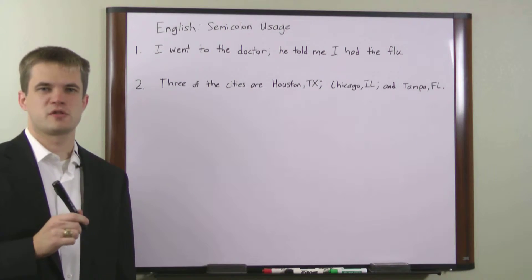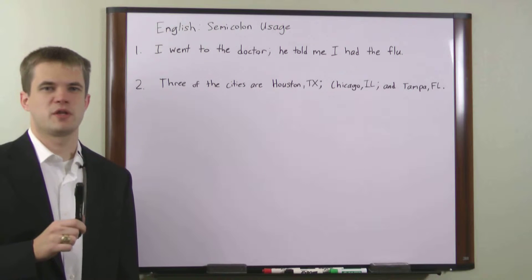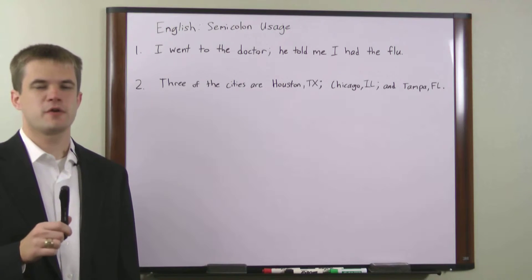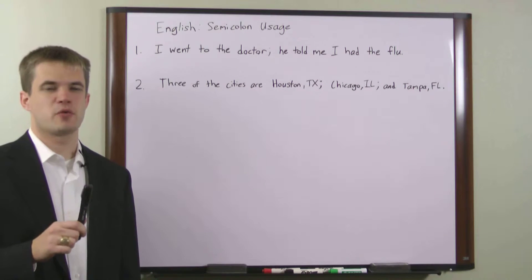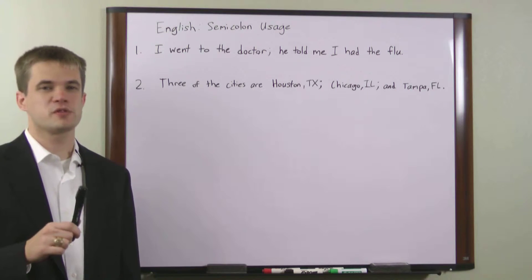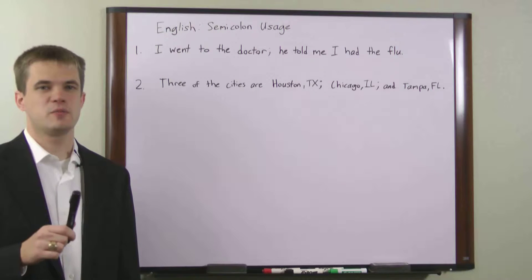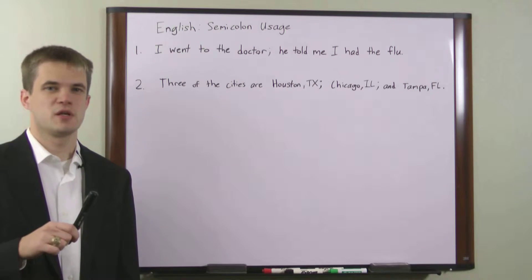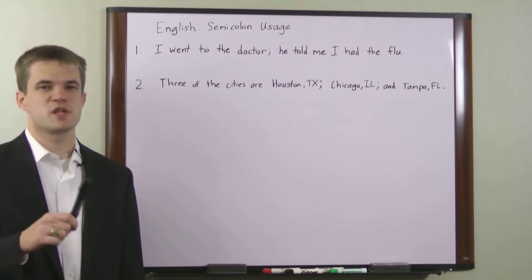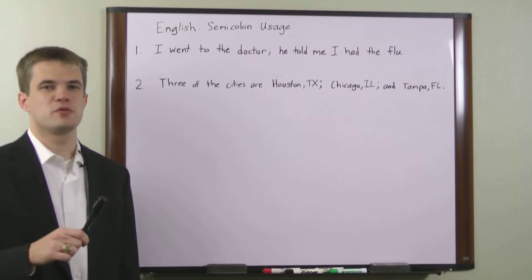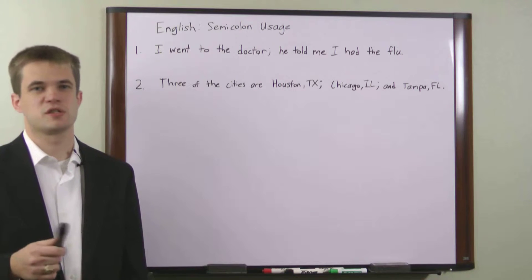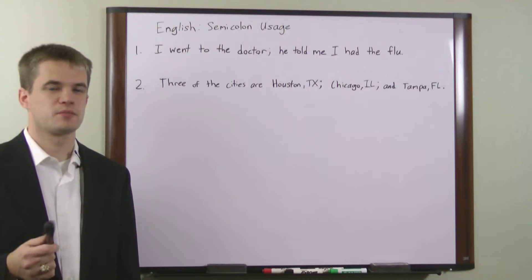There are two primary uses for the semicolon in the English language. The first is to separate two closely related independent clauses within a sentence. If you use a semicolon, there's no need to include a coordinating conjunction, such as 'and.'